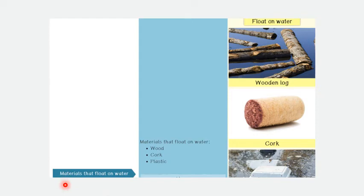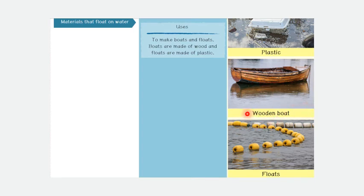Now, we go into materials that float on water. Materials that float on water such as wood, cork, and plastic. Examples include wooden boat and floats. Uses of materials that float on water to make boats and floats. Boats are made of wood and floats are made of plastic.